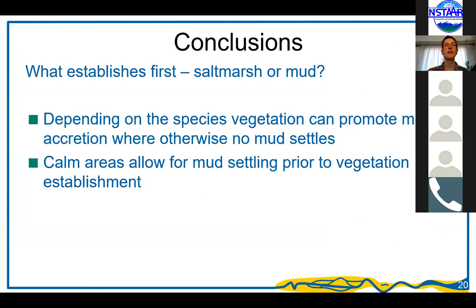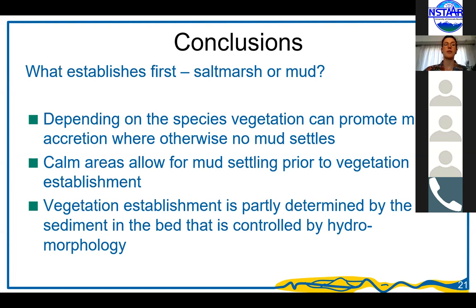To conclude: depending on the species, vegetation can promote mud accretion in places where no mud would settle because conditions are too dynamic — in those locations, salt marsh establishment is required first, and then mud settles. But in calmer parts of the bar, mud settling can also occur prior to vegetation establishment. Vegetation establishment is partly determined by the sediment composition in the bed, meaning some mud is required for certain vegetation types to establish, which in turn alters both vegetation pattern and mud pattern.